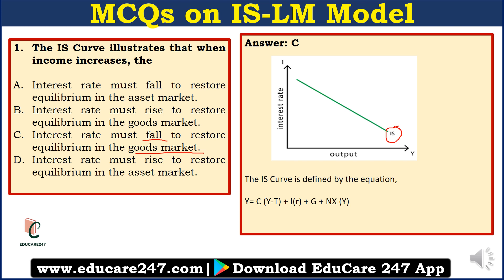The IS curve is your investment-saving curve. This curve basically shows the relationship between interest rate and output, or income, when the goods market is in equilibrium. The downward sloping of the IS curve implies that whenever there is a decrease in the interest rate, there is an increase in investment, which in turn increases national income or output. Whenever the interest rate is lower, businesses are more inclined to invest because they can get loans at a cheaper rate. So the more businesses invest, the more will be the output and income. Interest rate and investment are inversely related to one another.